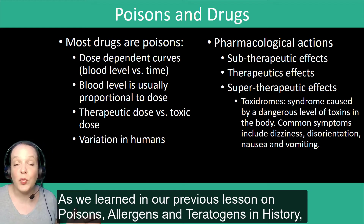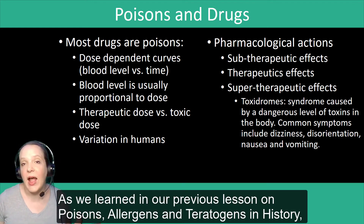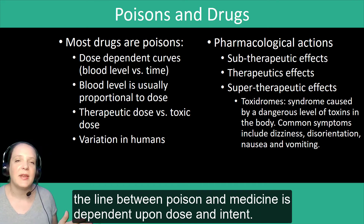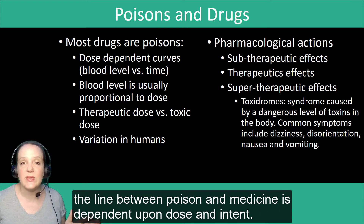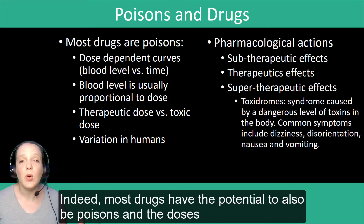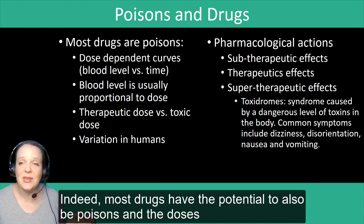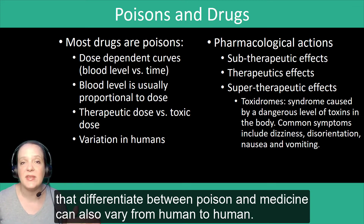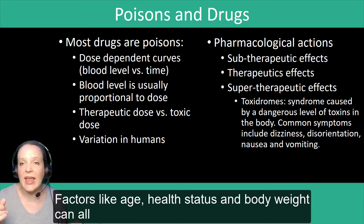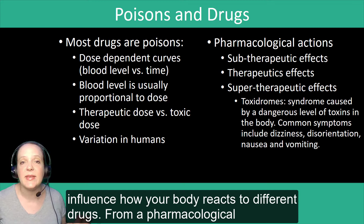As we learned in our previous lesson on poisons, allergens and teratogens in history, the line between poison and medicine is dependent upon dose and intent. Indeed, most drugs have the potential to also be poisons, and the doses that differentiate between poison and medicine can vary from human to human. Factors like age, health status, and body weight can all influence how your body reacts to different drugs.